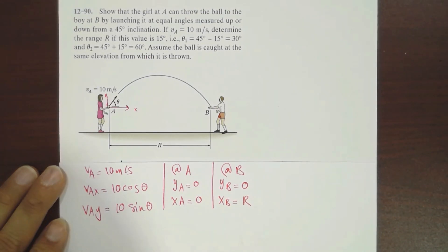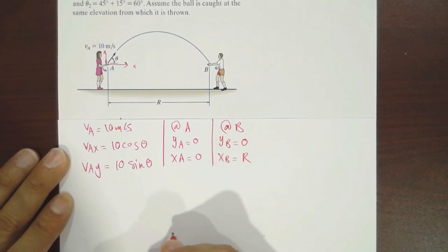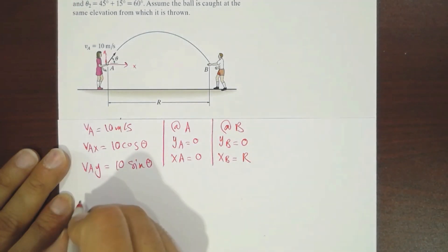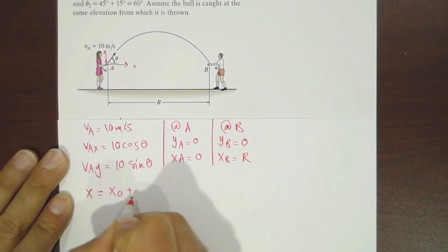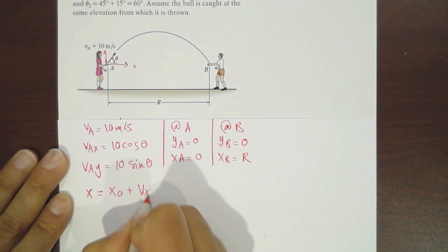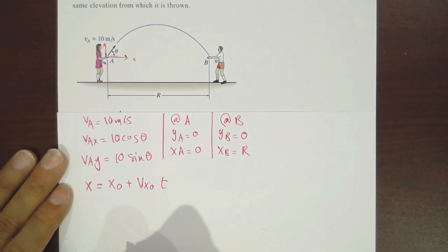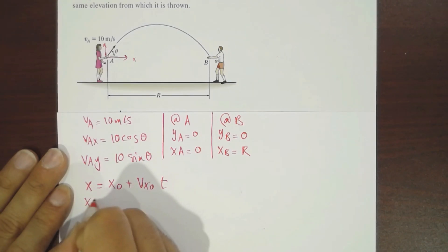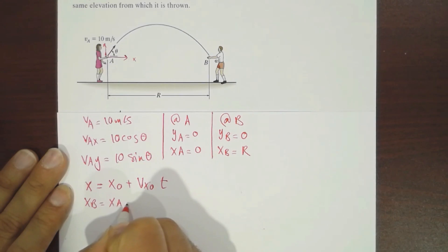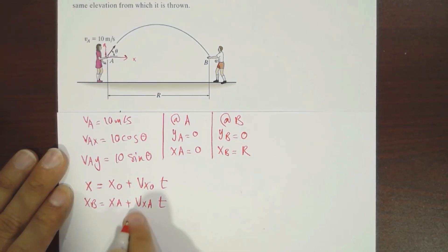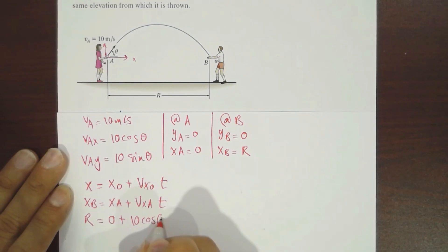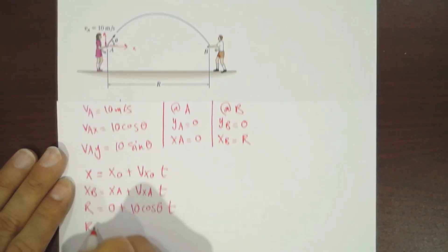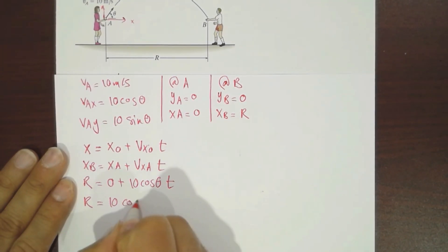We take the kinematic equation for the X component of motion: X equals X-naught plus V_X-naught times T. Applied to our case, X_B equals X_A plus V_XA times T. Since X_B equals R and X_A equals zero, this reduces to R equals 10 cosine theta times T.